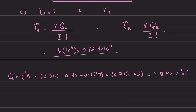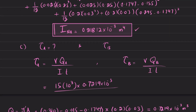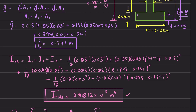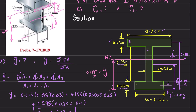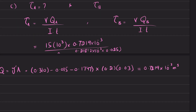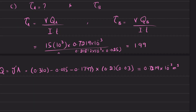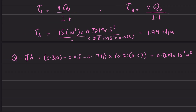Using I = 0.21812 × 10⁻³ m⁴ and thickness t = 0.025 m, solving gives the shear stress at point A equal to 1.99 MPa.